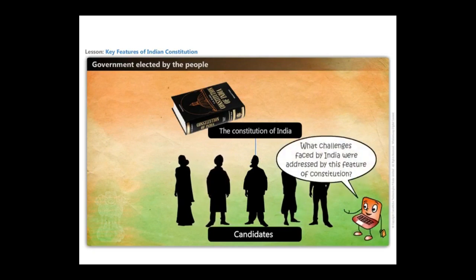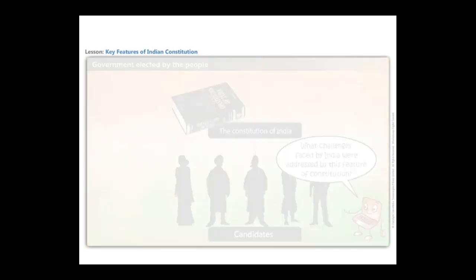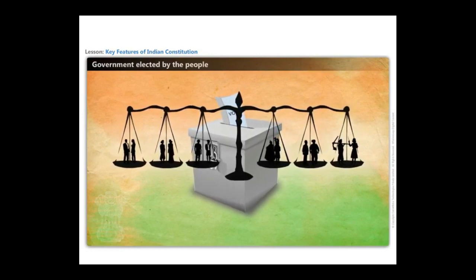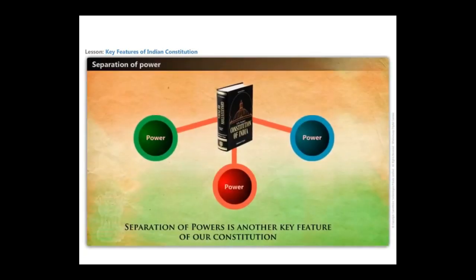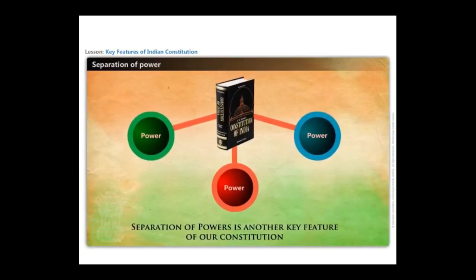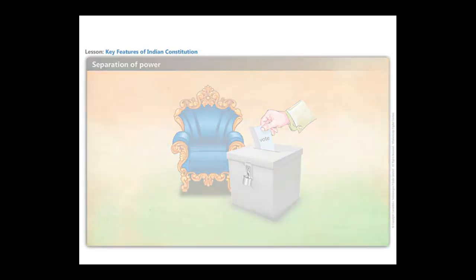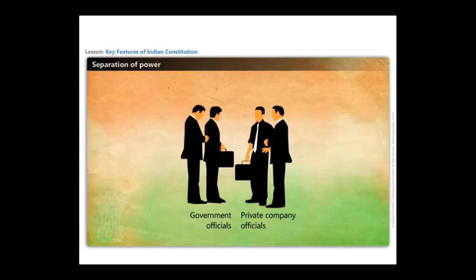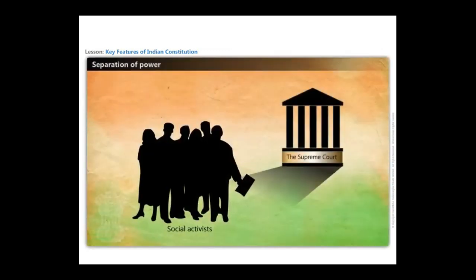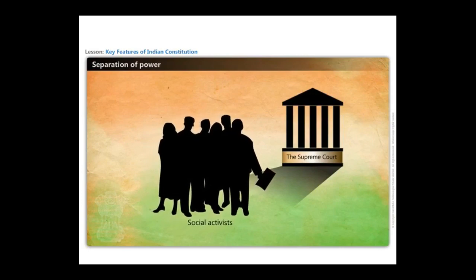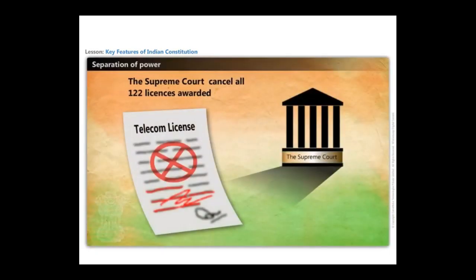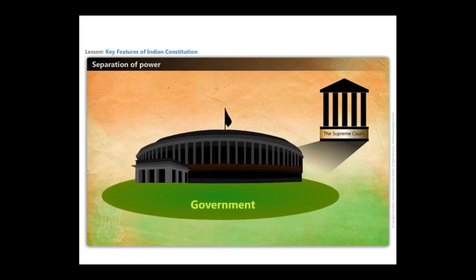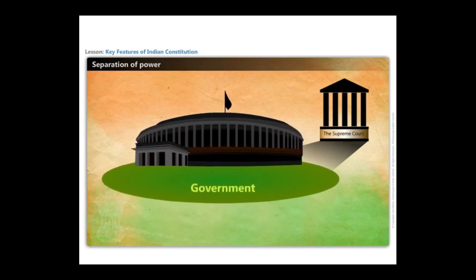This right of voting gives power to every person in the country and has helped reduce discrimination and inequality from Indian society. Separation of powers is another key feature of our constitution. In the 2G spectrum case, telecom licenses were given way beyond market price to several private companies by government officials. The issue was raised by social activists in the Supreme Court, which gave a judgment to cancel all 122 licenses awarded. The government was asked to formulate a fresh policy and ensure transparency and right pricing so that the country has no financial loss through sale of its resources.